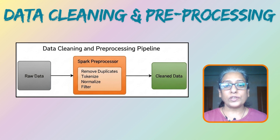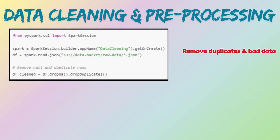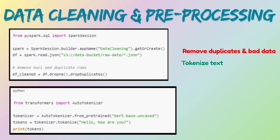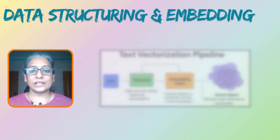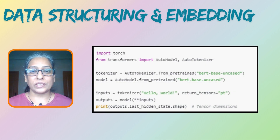Next, we need to clean and pre-process this raw text data before it can be used to train the AI models. The steps involved are: remove duplicates and bad data, tokenize text into words or sub-words, normalize the text to lowercase, remove special characters, and filter inappropriate content. Once cleaned, the text data is converted into numerical vectors called embeddings, capturing their meaning.